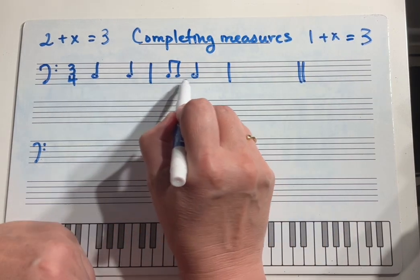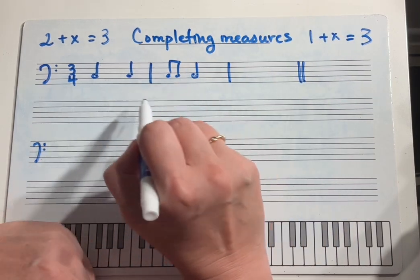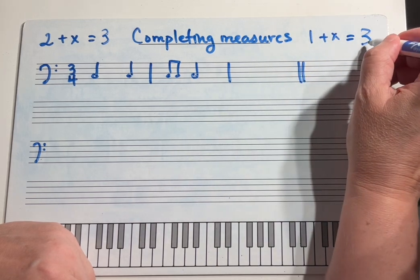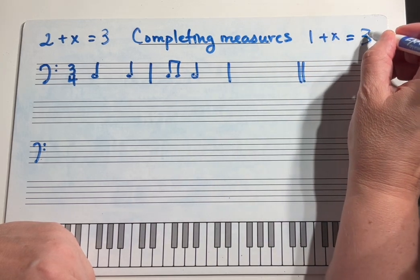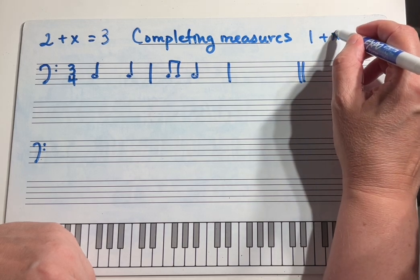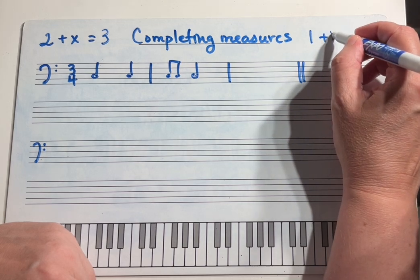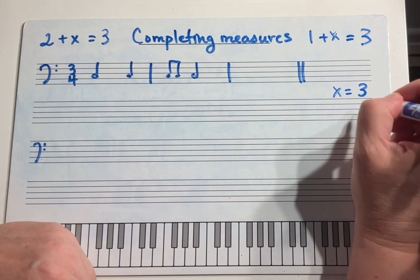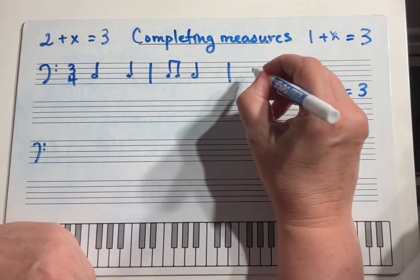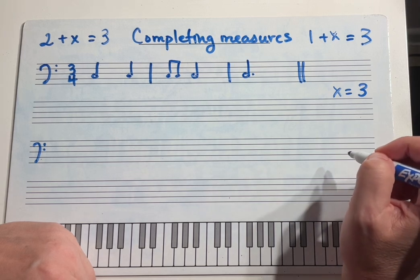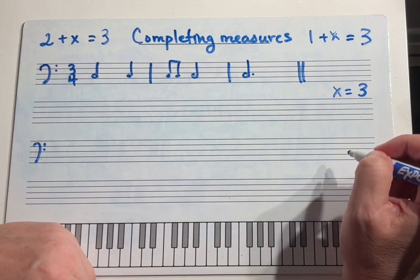Sort of the reverse of this — now I have a completely empty measure. So I know I need three beats, and I can come up with one note, x, that equals three. You may remember that a dotted half note equals three beats.